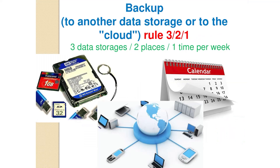You need to protect information not only from intruders but also from accidental deletion, using the 3-2-1 rule: information is protected if it exists in three copies in two different places, with one copy made once a week. For example, every Friday copy important documents from your work computer to a flash drive, then copy it to your home computer. The information is then on three different media in two different locations. Copying to the cloud is also a good solution, though it requires trust in the storage provider.